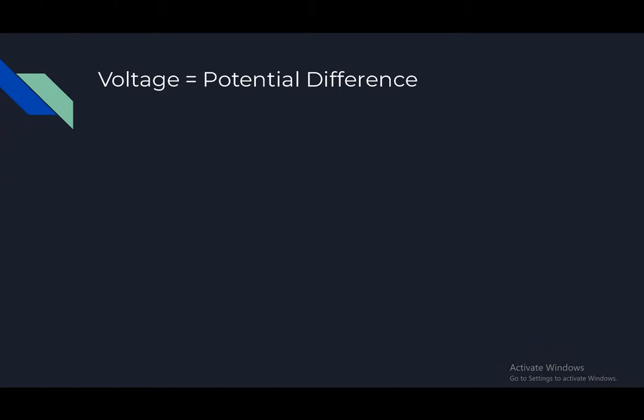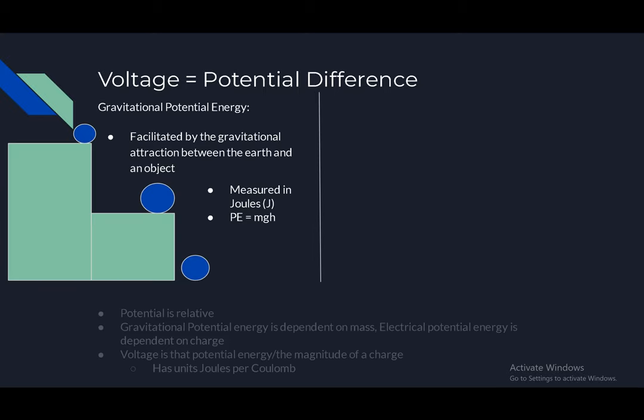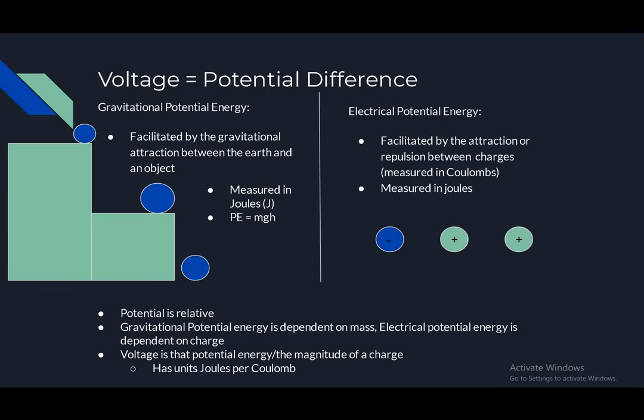What is voltage — equals potential difference? Gravitational potential energy is facilitated by the gravitational attraction between the Earth and an object. It is measured in joules. Electrical potential energy is facilitated by the attraction or repulsion between charges. It is also measured in joules.